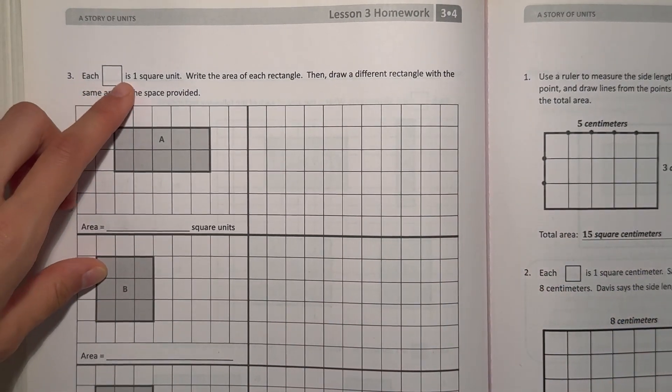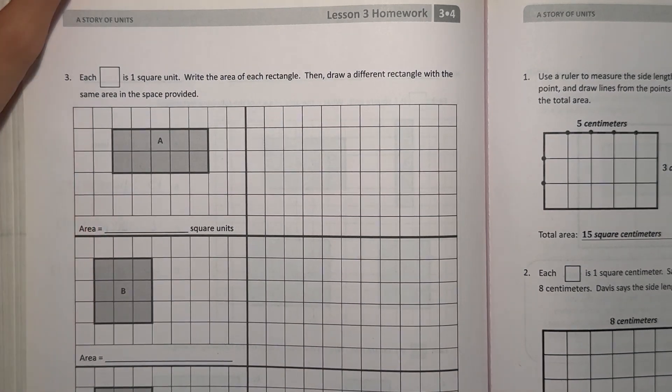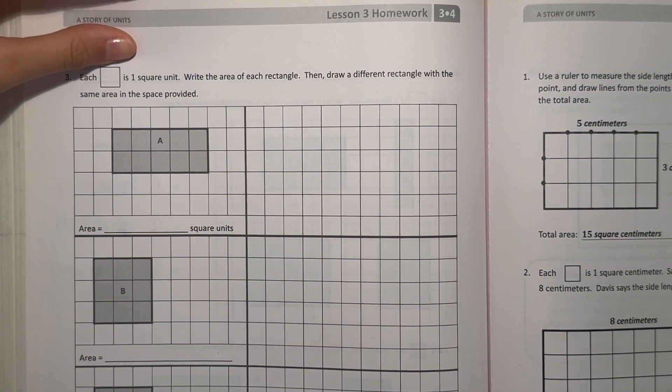Number 3, each square is 1 square unit. Write the area of each rectangle, then draw a different rectangle with the same area in the space provided.